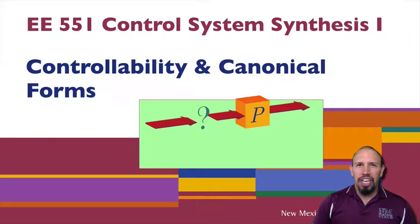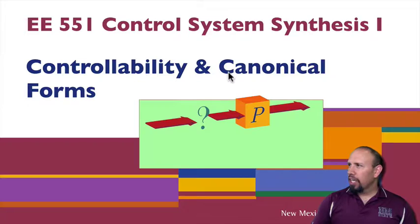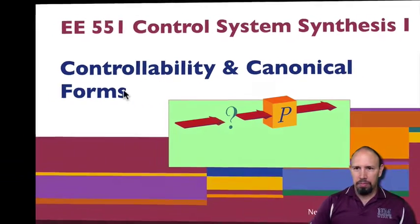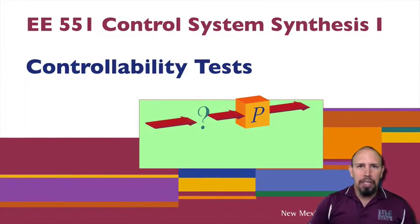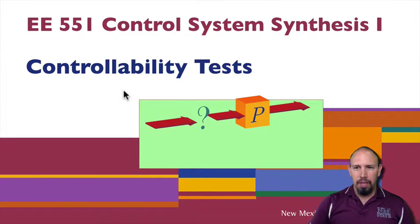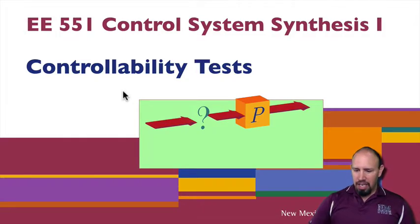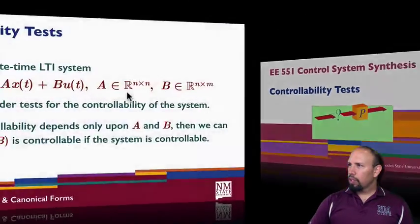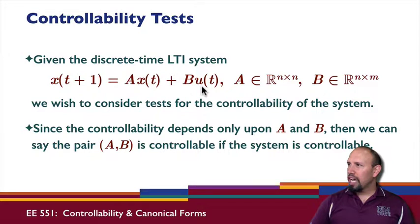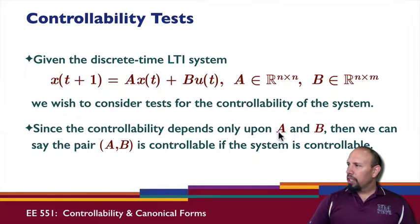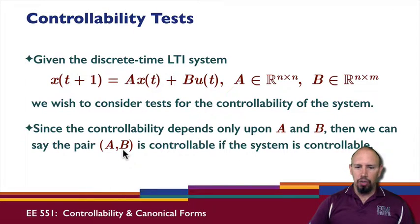In this topic, we're continuing our discussion on controllability, and we're going to look at canonical forms. We saw last time that there were a number of tests for stability that we could employ, so we're going to look more in detail at these controllability tests. We're given a discrete time LTI system, and since controllability depends only upon A and B, we can talk about the pair AB as being controllable.